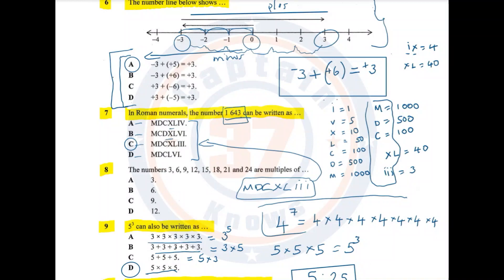Question number 8. The numbers 3, 6, 9, 12, 15, 18, 21, and 24 are multiples of... Let me just create some space here so that you can see where I am writing.